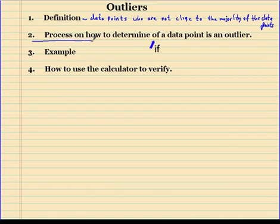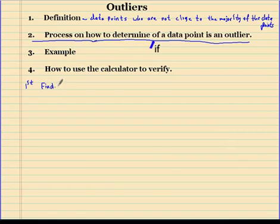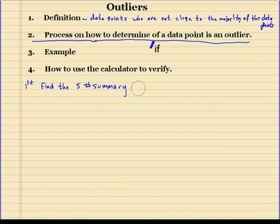The important thing is the process of how to determine if a data point is an outlier. The first thing you want to do is find the five number summary. If you don't know how to do that, make sure you go back and watch that video. Next, you're going to define an upper cutoff.